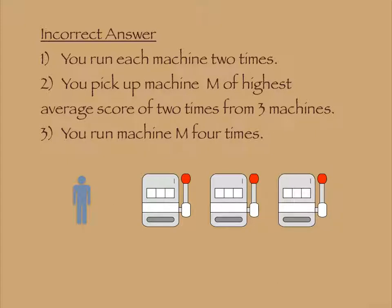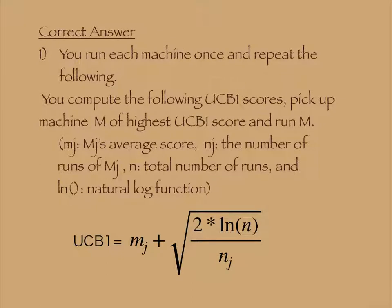However, fixed selection based on initial estimation may not be sufficient. Our correct answer is as follows. You run each machine once and repeat the following process. You compute the following UCB1 scores.